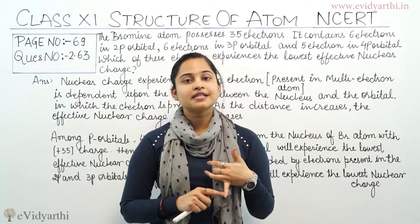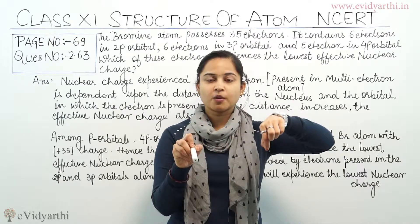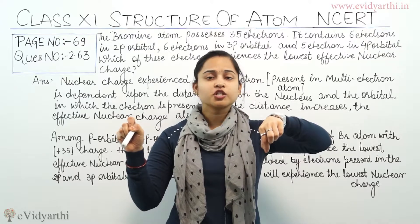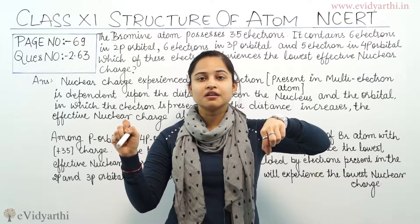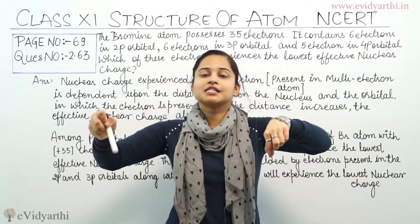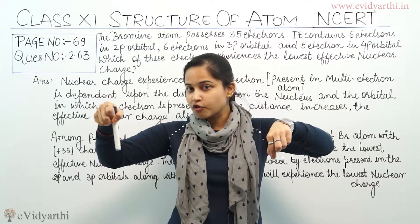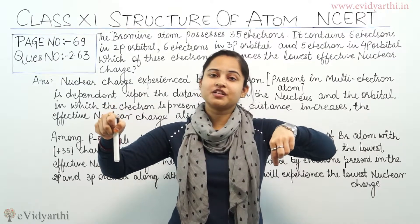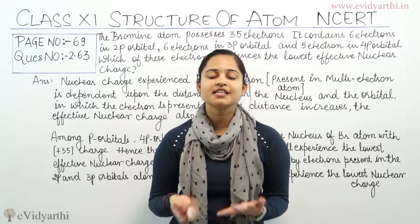Now applying this to the question: I have electrons present in 2p, 3p, and 4p orbitals. If the nucleus is here, 2p orbital is closest, then 3p, and 4p is farthest. The electron in the 4p orbital will experience the least effective nuclear charge, because the distance between the 4p orbital and the nucleus is very large. As distance increases, effective nuclear charge decreases.